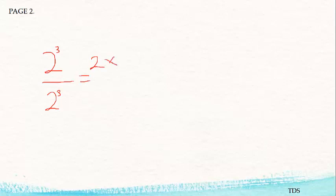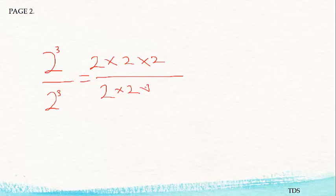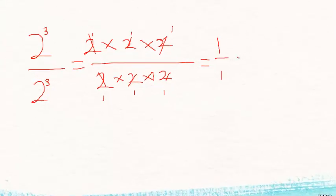So two to the power three over two to the power three: let us expand the top — two times two times two — and the bottom — two times two times two. Now we can do a cancellation: each factor on top cancels with the corresponding factor on the bottom, leaving one.